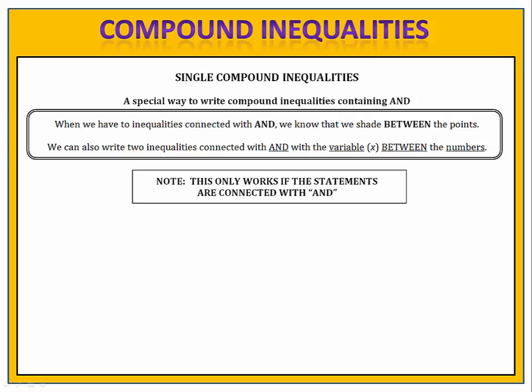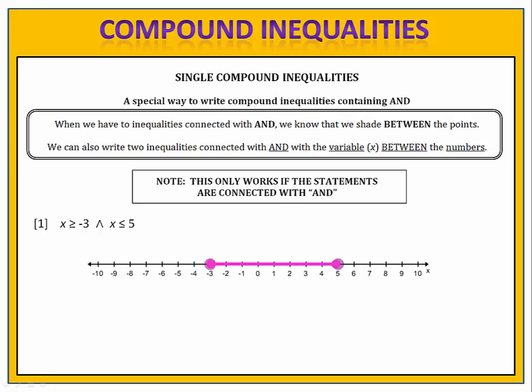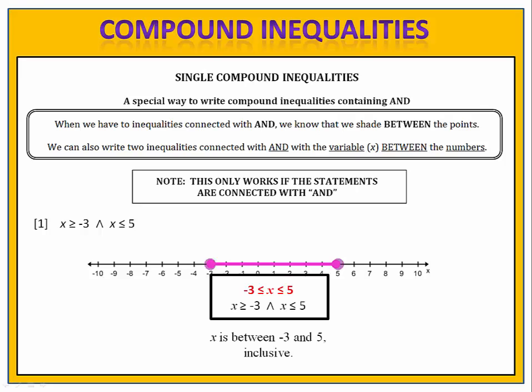When working with compound inequalities that contain the word and, you might sometimes see a different notation. Take a look at the first exercise with x is greater than or equal to negative three and x is less than or equal to five. The shaded area on the number line is between negative three and five. If we identify the two end points, negative three and five, and consider that x is in between them, we can add a couple of inequalities to get a compact notation showing x between negative three and five. It's important to remember that we'll always use the less than or less than or equal to symbols in this notation. This notation is equivalent to the original — they're synonymous, so it's good to be familiar with both.